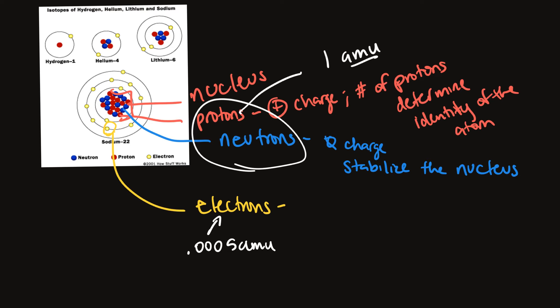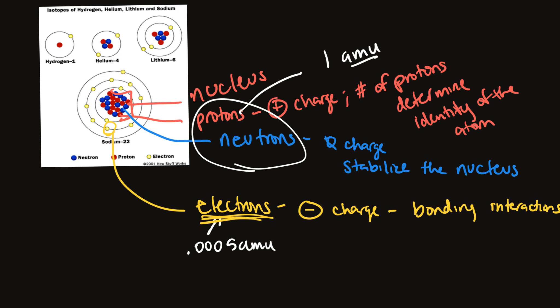Going back to the function of electrons: electrons carry a negative charge, which counterbalances the charge of a proton one-to-one. They are responsible for bonding interactions between atoms. What causes chemical reactions is really due to electrons — electrons moving from one atom to the next. This is the reason we see explosions and other chemical reactions; it's all based on electrons.